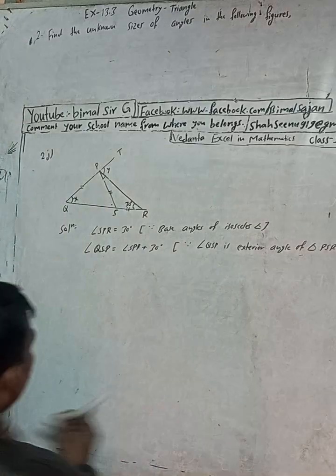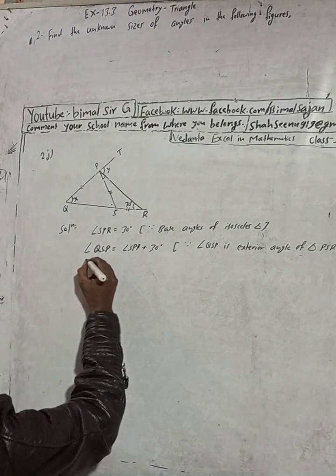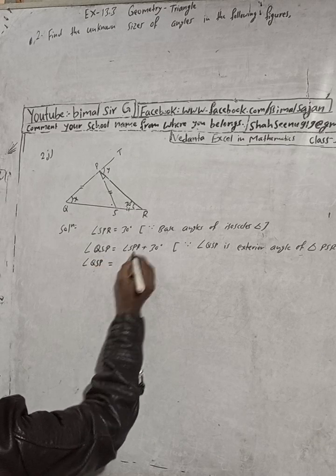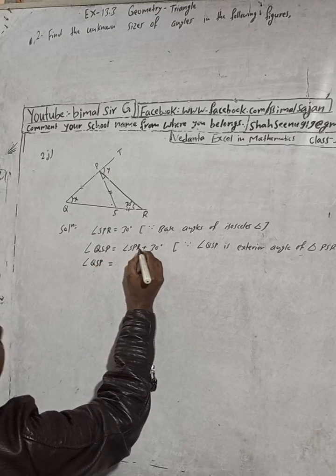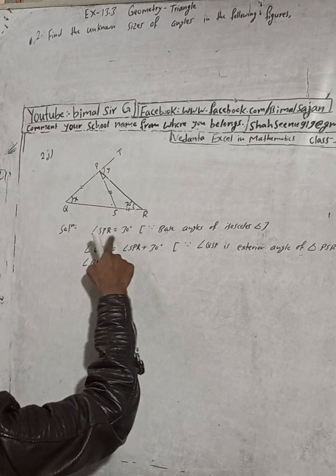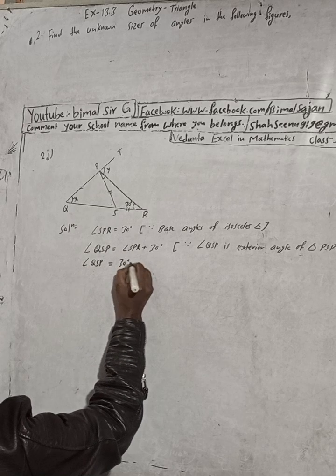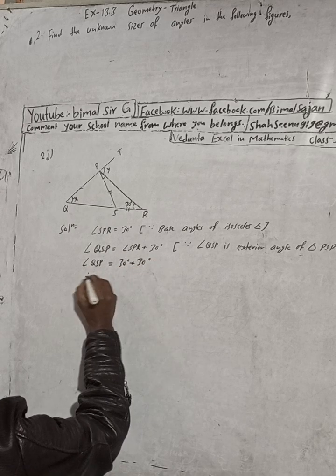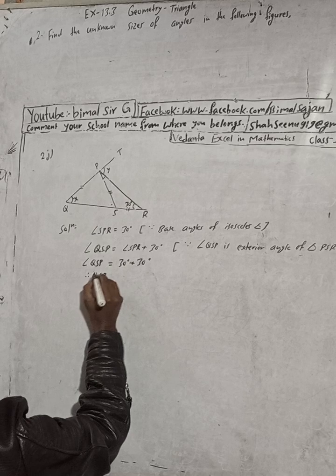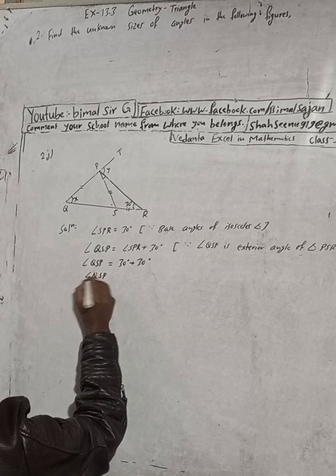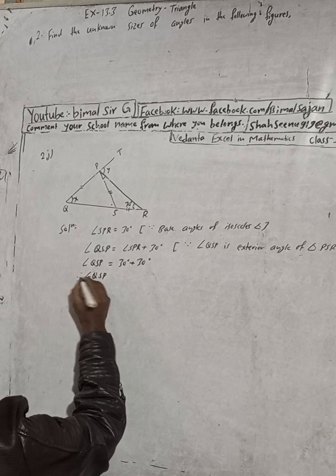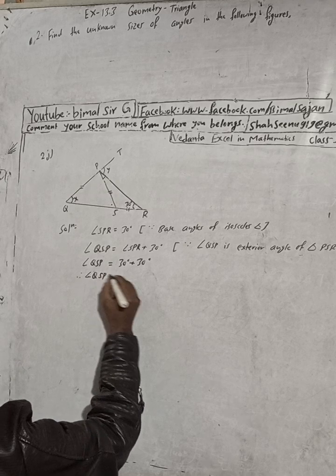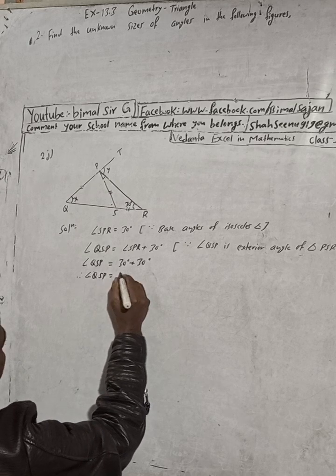Now, angle QSP is equal to angle SPR plus the other interior angle. Angle SPR is 30 degrees, plus this 30 degrees. Therefore, angle QSP is equal to 60 degrees.